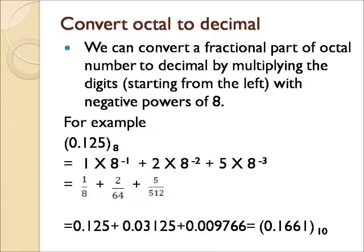Here we can see how to convert a fractional part of an octal number to decimal. We convert a fractional part by multiplying the digits with the negative powers of 8. In the given example, 0.125 to the base 8, we write it as 1 into 8 raise to minus 1.